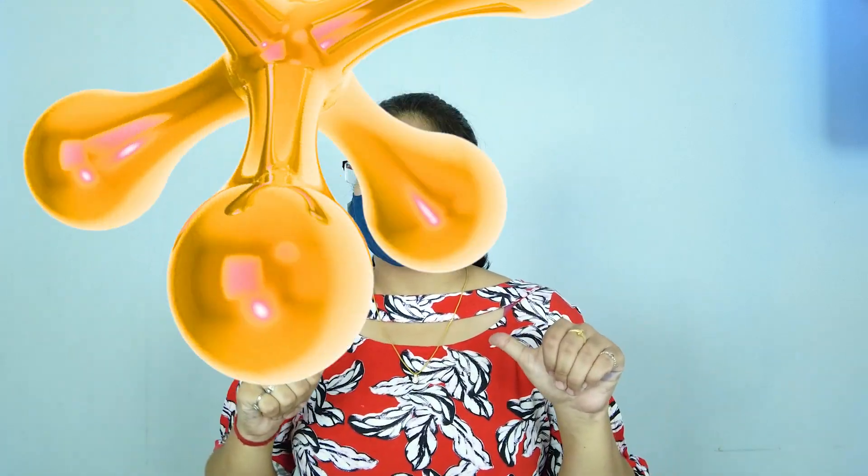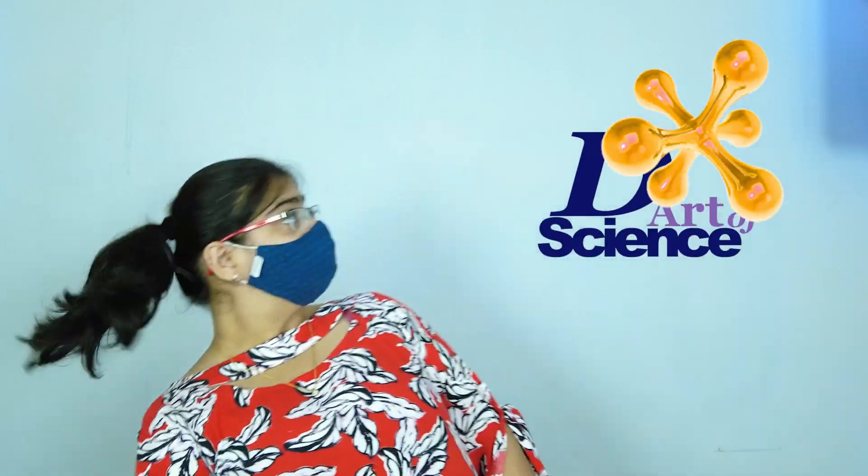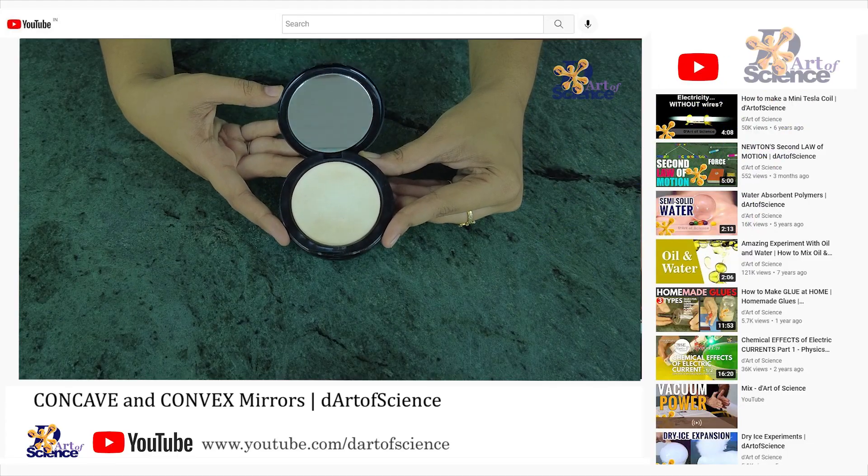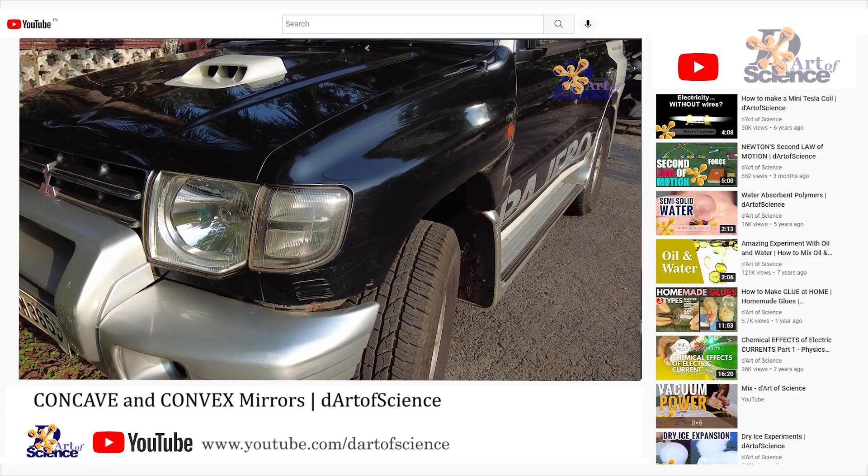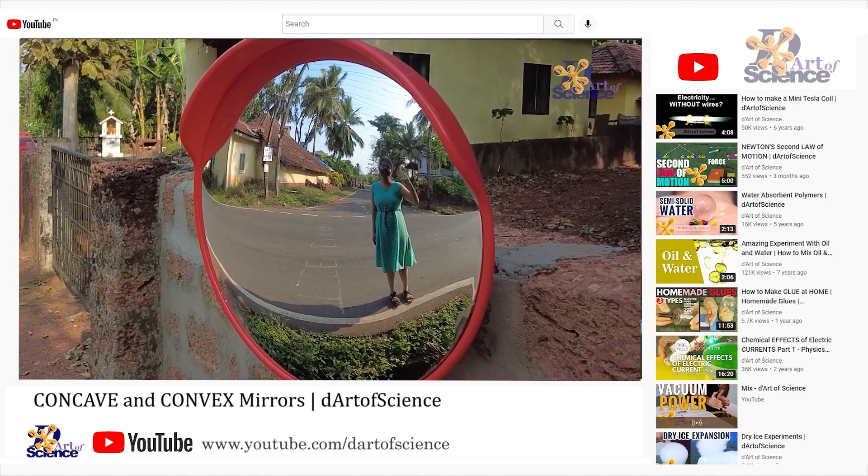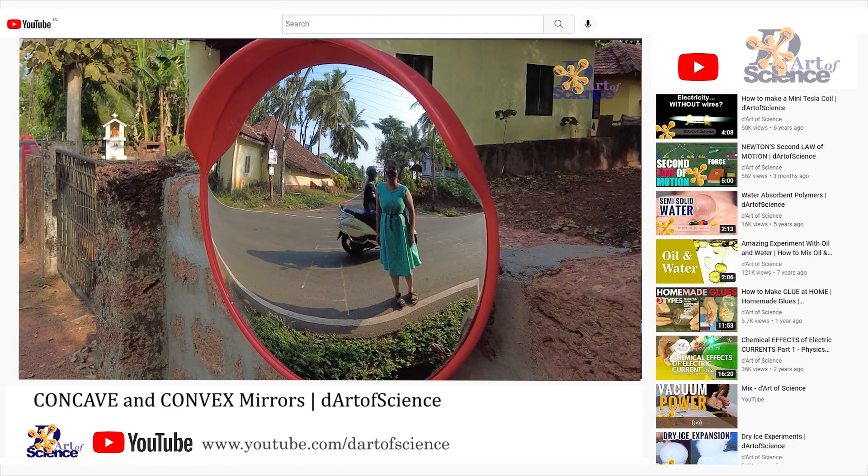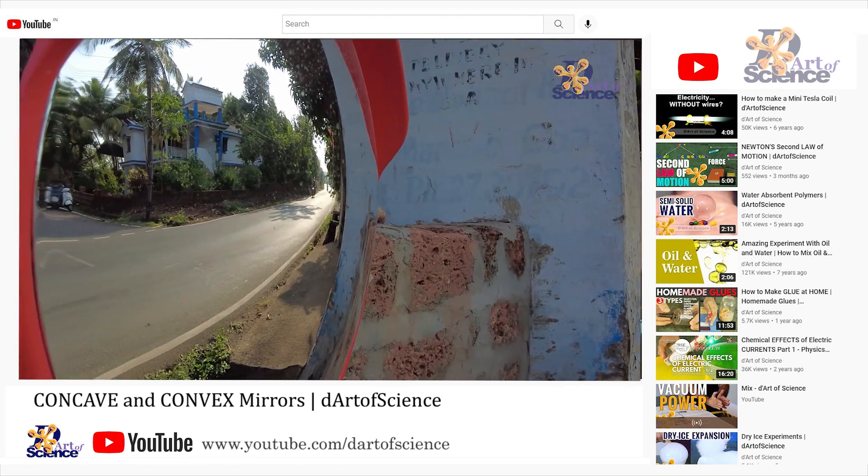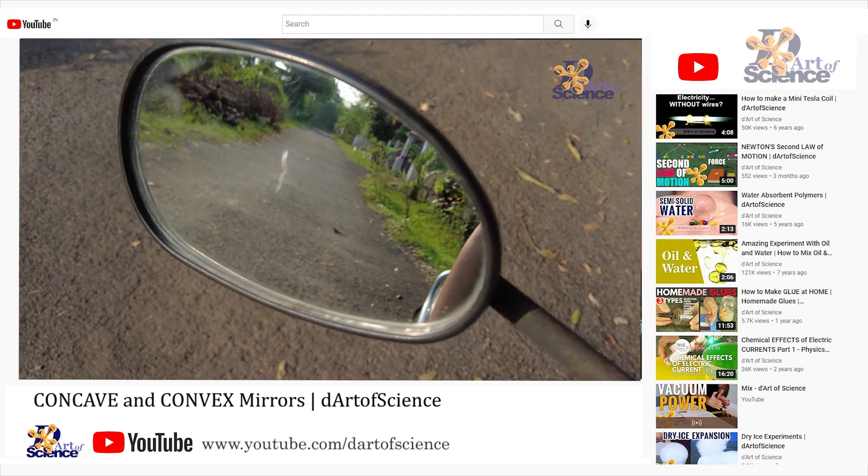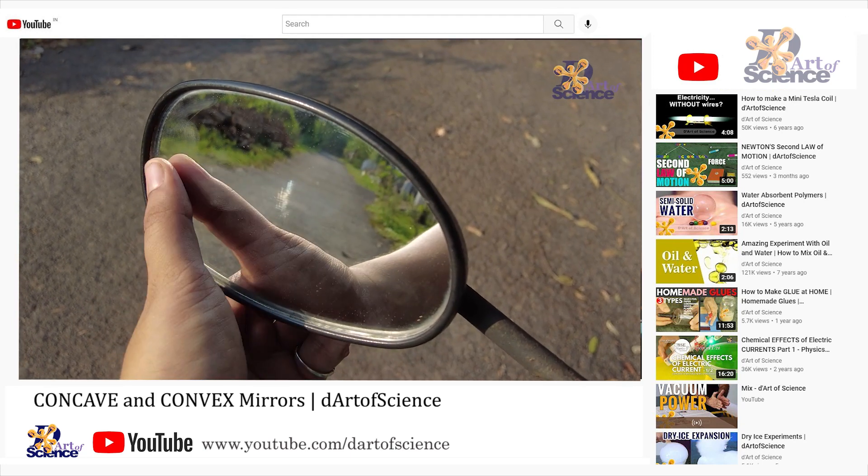Hey guys, I'm Chani and you're watching The Art of Science. Last week we saw what concave and convex mirrors are. If you haven't seen the video, make sure you check it out - I have linked it up here and in the description box as well. Today we are going to see what concave and convex lenses are, and not only that, but we are also going to make these lenses with a very simple DIY that even you can do at home.